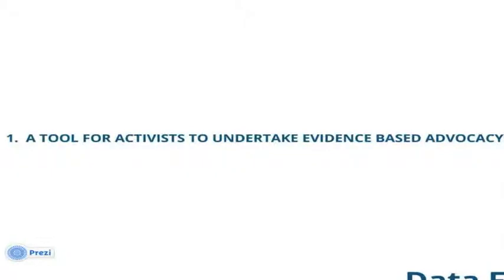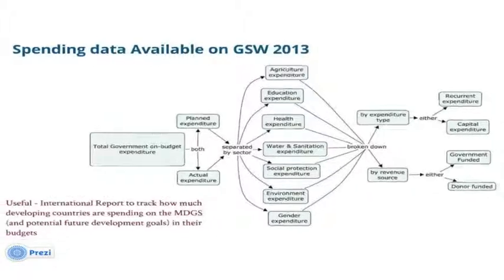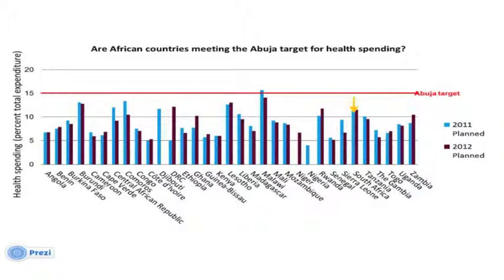As a tool for activists to undertake evidence-based advocacy, the report gives access to information that makes sense of not only the health sector but the social determinants of health — what's happening in gender affects health, what's happening in environmental issues affects health. That map provides a clear picture for how activists in particular sectors can connect their experiences meaningfully to what the numbers are showing, which is a lack of commitment.